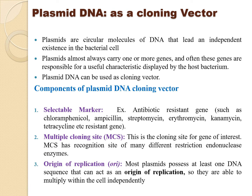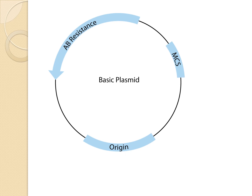The third component is the origin of replication. Most plasmids possess at least one DNA sequence that acts as the origin of replication, allowing them to multiply within the cell independently. This is the main mechanism responsible for the division of the plasmid. A diagram of the cloning vector shows it contains an antibiotic-resistant selectable marker such as ampicillin or tetracycline, multiple cloning sites, and the origin of replication at the bottom.